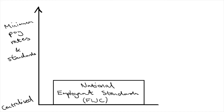Now, let's say the minimum wage is $20 — that is, every worker in Australia is paid at least $20 an hour, no matter their industry and how basic their skill set might be.